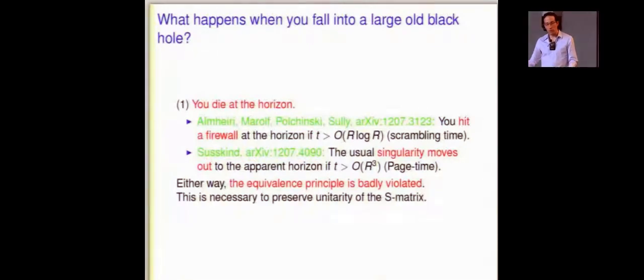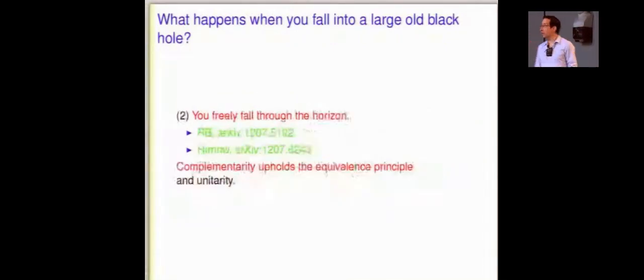Lenny thinks that it's the page timescale, the timescale for half of the black hole to evaporate, which is the same order of magnitude as all of it to evaporate, and of order R cubed in Planck units. But again, either way, the equivalence principle is badly violated. People who hit the horizon hit a kind of firewall or an enlarged version of the singularity, and the claim is that this is necessary to preserve the unitarity of the S matrix.